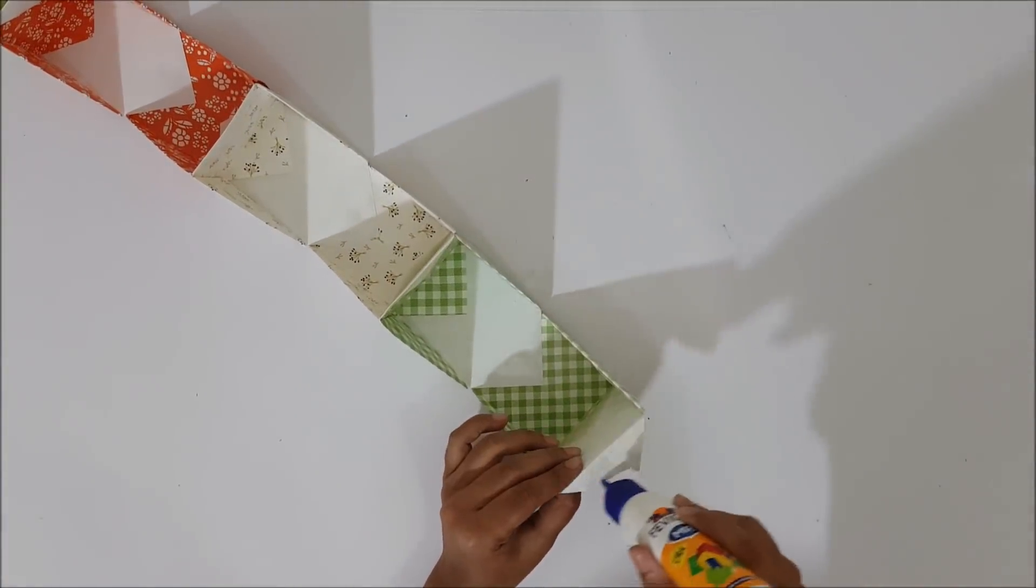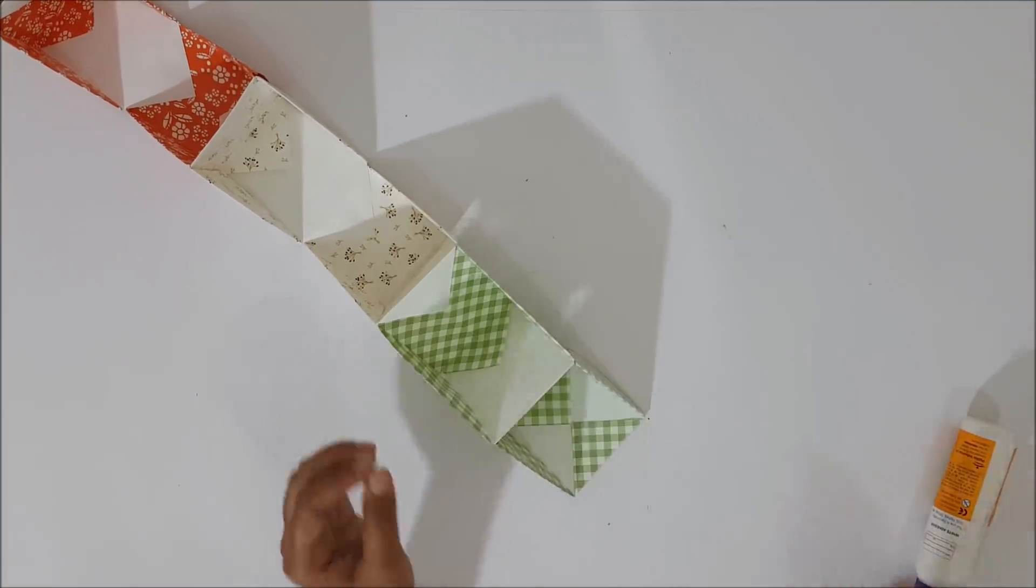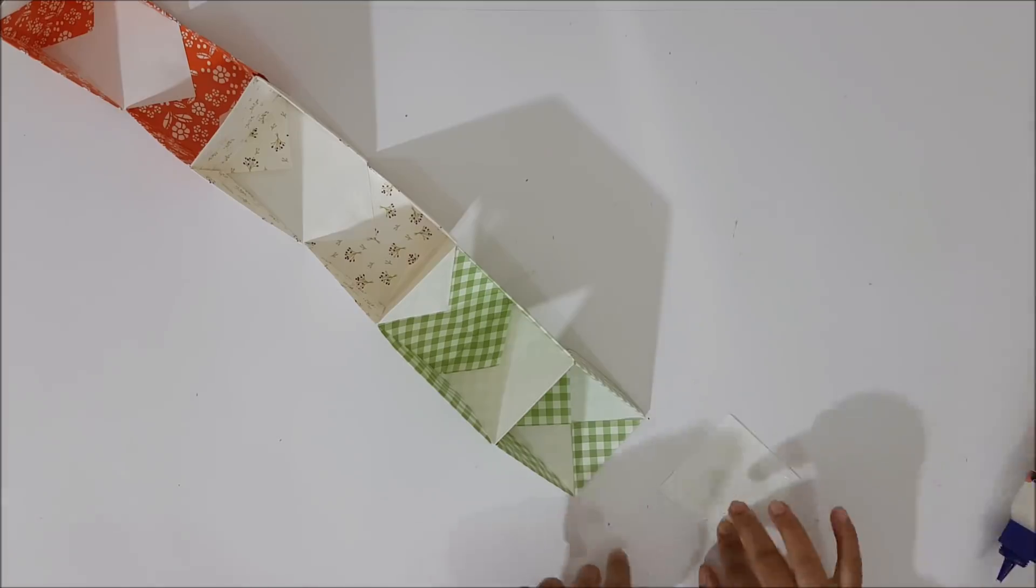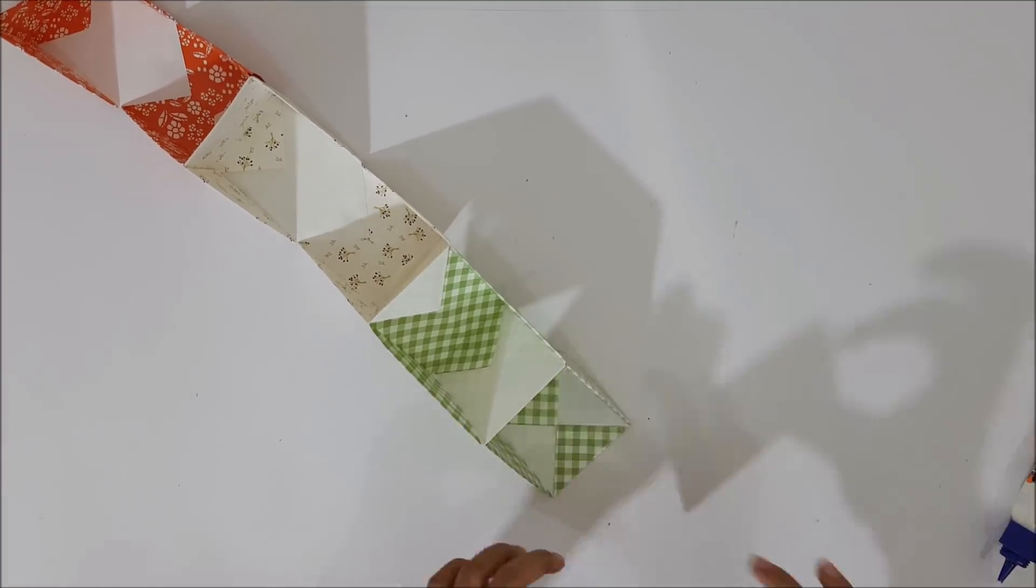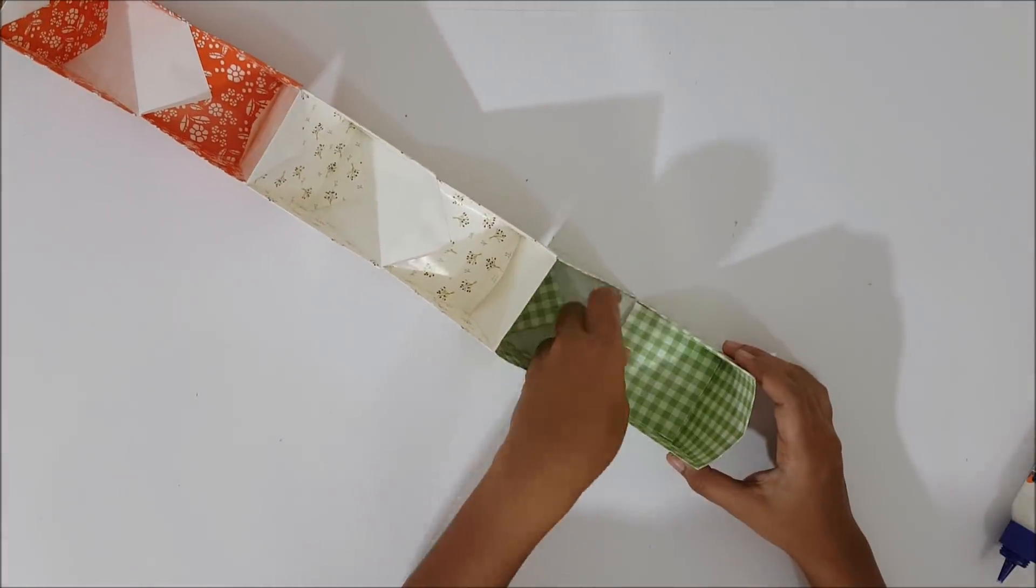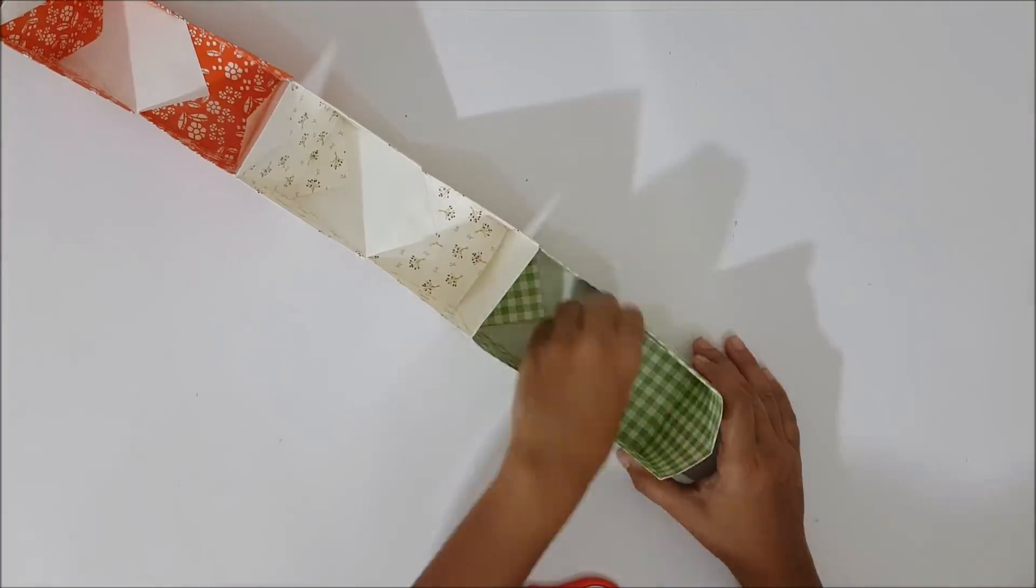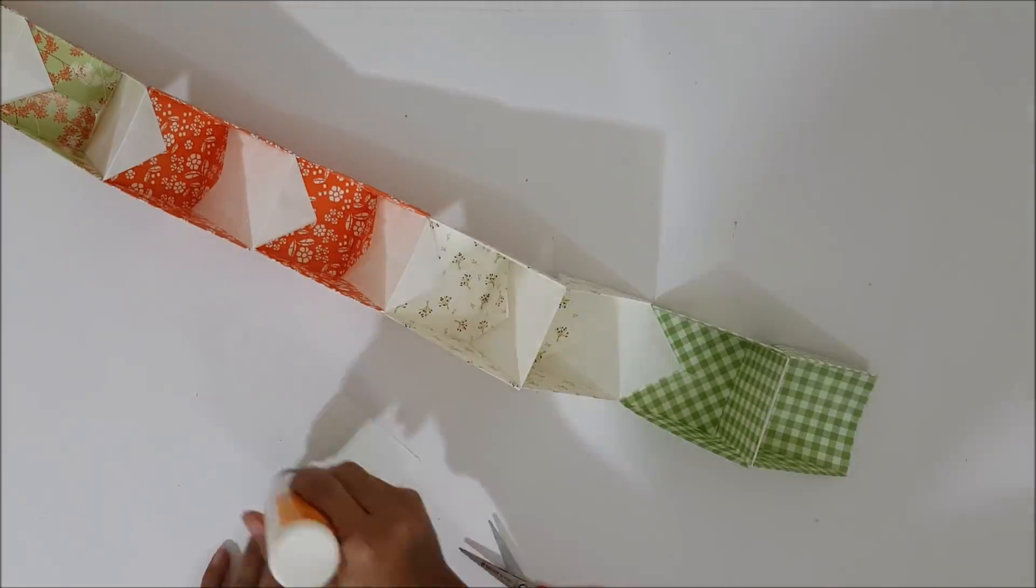Stick the triangle on the biggest cube inside the cube as shown. Now stick the square pieces that we kept aside earlier. Repeat the same for all the cubes.